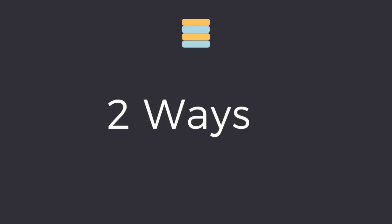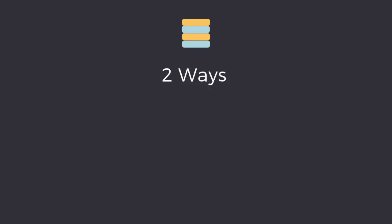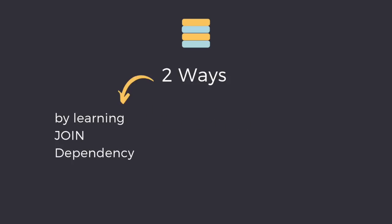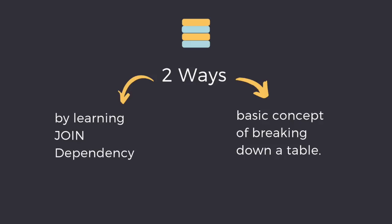Now there are two ways to understand the fifth normal form. First is to focus on join dependency and get confused. The other is to understand the basic concept of breaking down a relation and why we need it. We will choose the second option.